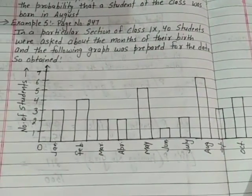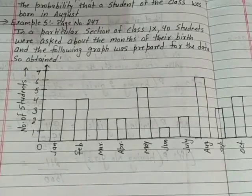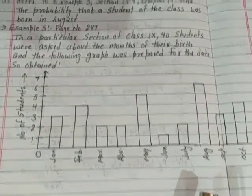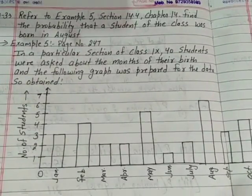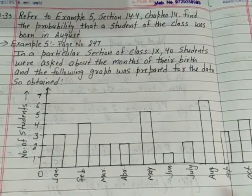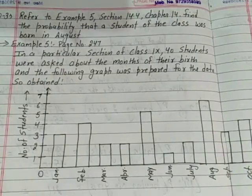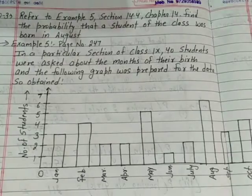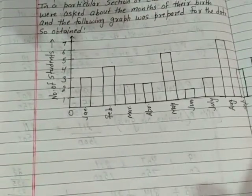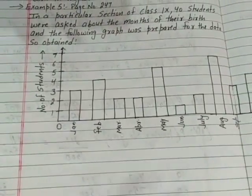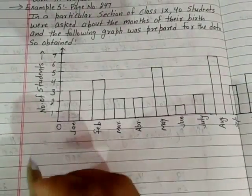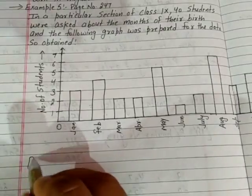So clear. Now the question: what has it asked us? It said find the probability that a student of the class was born in August. We need to know the probability of a student being born in August.